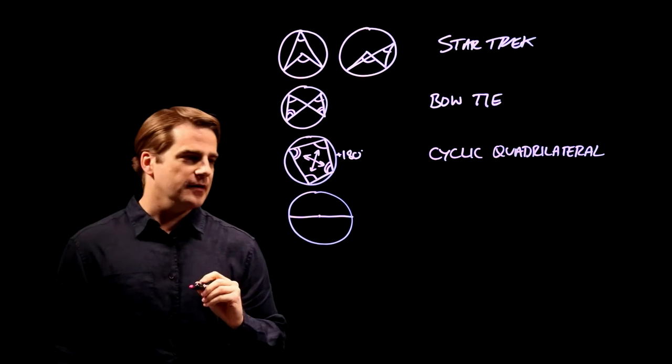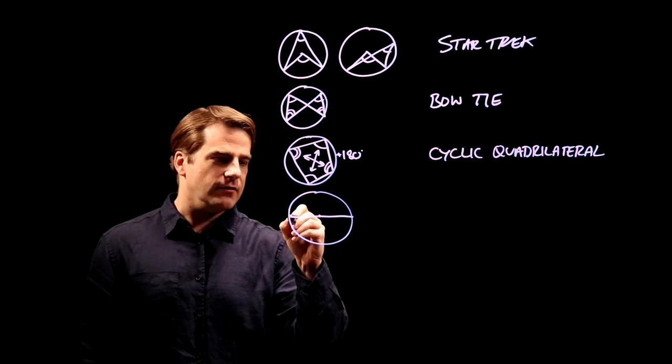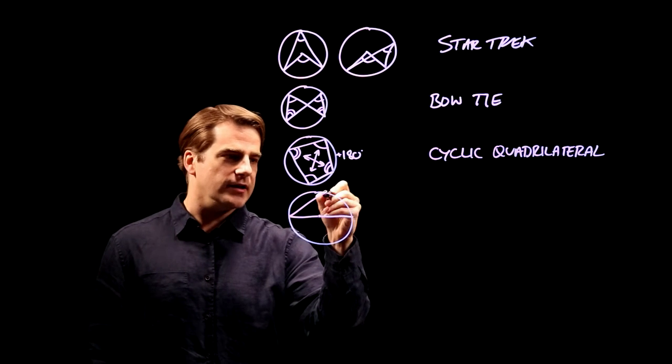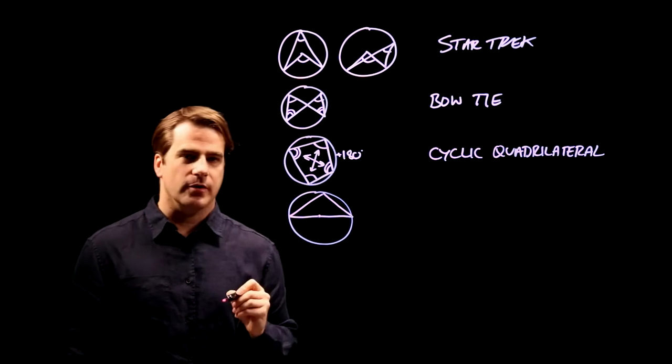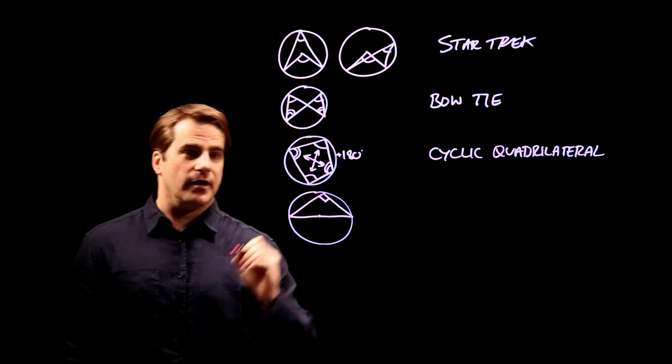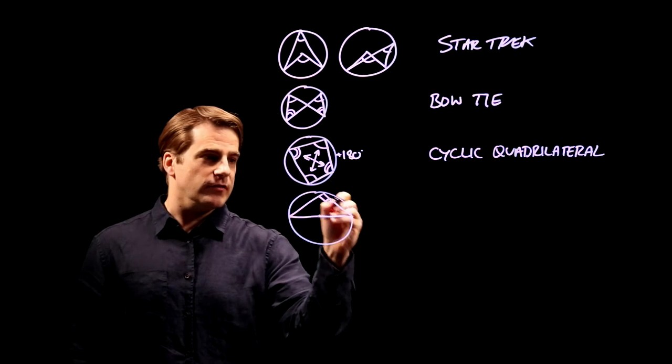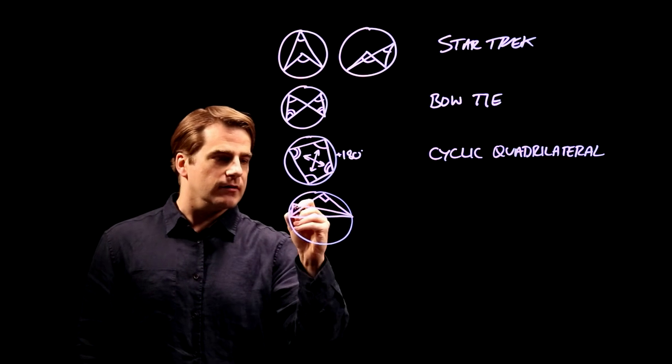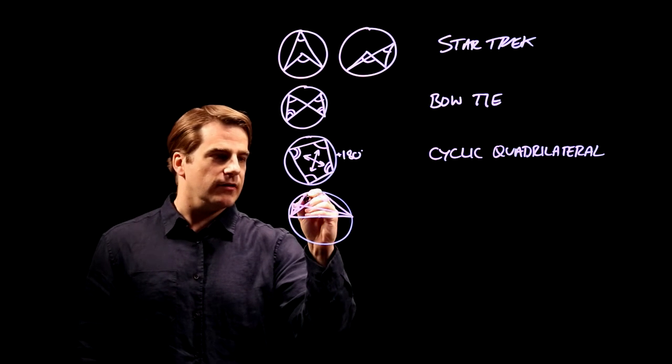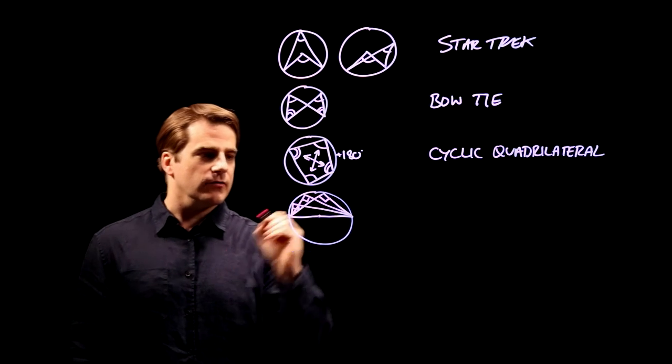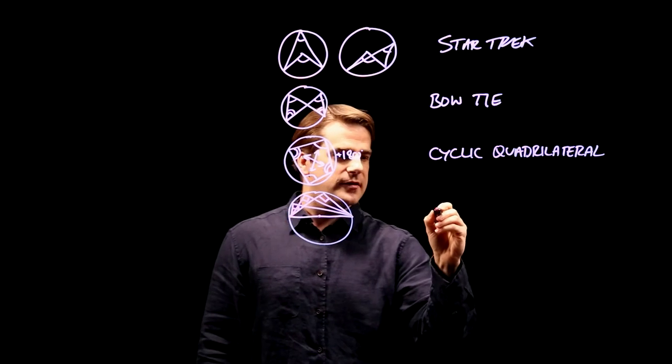Then a line from that point there to the edge, back to the other point there, that will always be a right angle. No matter where you move this point. So to there, right angle. There, right angle. Semi-Circle.